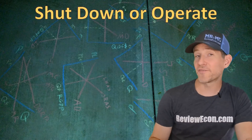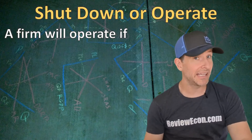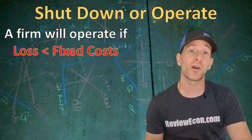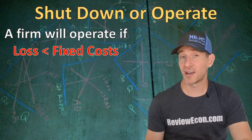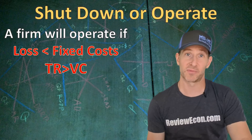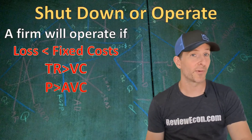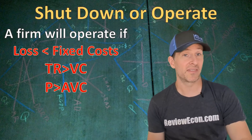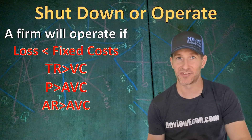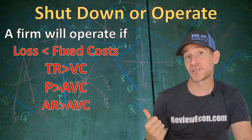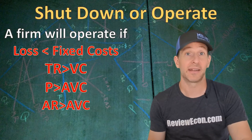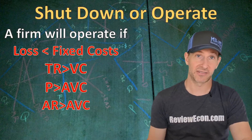A firm will go ahead and operate even while suffering economic losses if their losses are less than their fixed costs. Losses will be less than fixed costs if their total revenue is greater than their variable cost, which also means that the price will be greater than the average variable cost, or the average revenue will be greater than the average variable cost. If any of these things are true, the firm will be losing less money if it continues to operate even while earning economic losses.